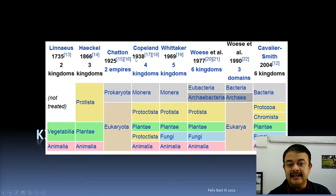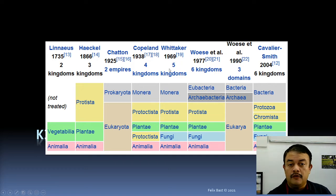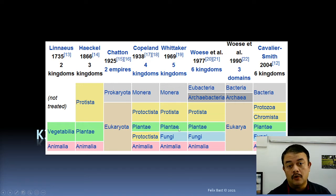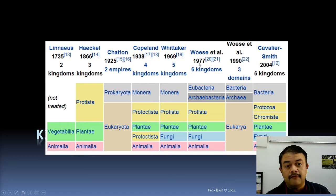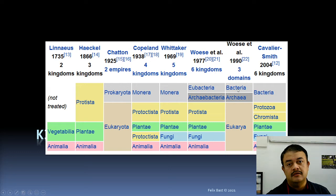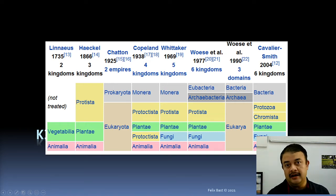Then came Copeland in 1938 and Whittaker in 1969, with quite similar systems. Copeland proposed Monera, Protista, Plantae, and Animalia. Whittaker's second Protista became Fungi, giving us the five kingdoms: Monera, Protista, Fungi, Plantae, and Animalia. Whittaker's 1969 Five Kingdom system is still followed in many textbooks, though it has been eclipsed by Carl Woese's 1977 and 1990 work, making it largely obsolete.